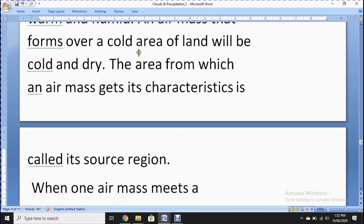An air mass that forms over a cool area of land will be cool and dry. If it moves over an area with no water, it doesn't have moisture and becomes dry. The area from which an air mass gets its characteristics is called its source region.